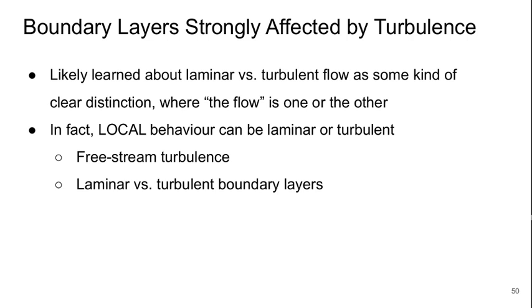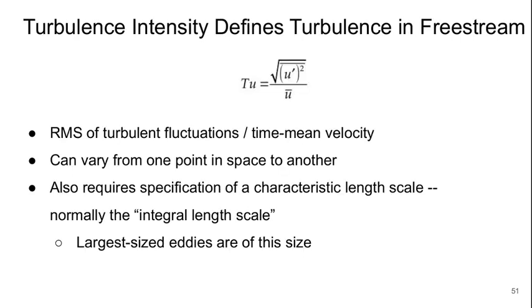Now the behavior of boundary layers quantitatively are strongly affected by turbulence. So you likely learned about laminar versus turbulent flow as some kind of clear distinction where the flow is one or the other. But in fact, it's really the local behavior that can either be laminar or turbulent. So we talked about the free stream turbulence or the laminar versus turbulent boundary layers.